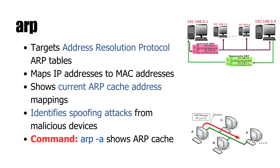ARP, or Address Resolution Protocol, is the part of networking that links IP addresses to MAC addresses. Running arp -a on Windows, Linux, or macOS shows you the current ARP cache, which is basically a table of all known IP-to-MAC mappings on your local network. This is super helpful for diagnosing issues like a device being physically connected but not behaving, or even detecting spoofing attacks where rogue devices pretend to be legitimate ones.